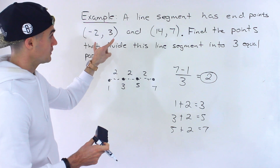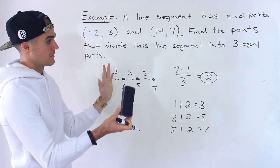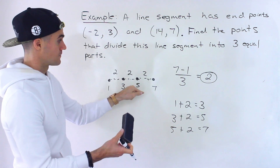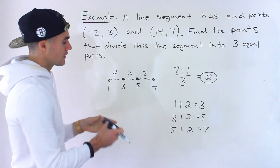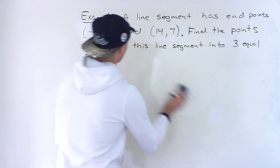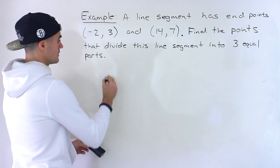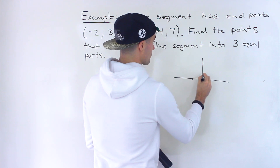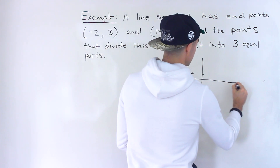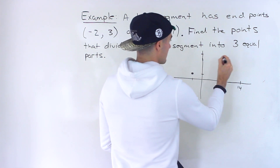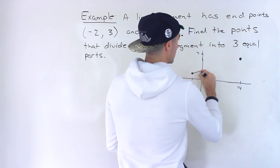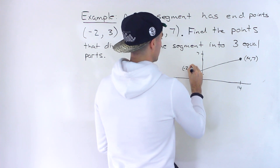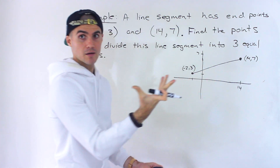That's the process we're going to use here. We go through the x values separately, find the distance between them, divide that distance by 3, and then add that distance twice to get the two intermediate values. So we have endpoints negative 2 and 3, and 14 and 7. Let's draw a rough diagram — negative 2 and 3 is over here, and 14 and 7 is over here. We need to find two points that split the segment into three equal parts.